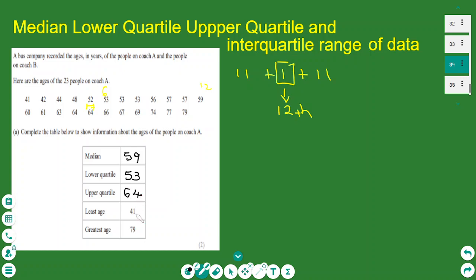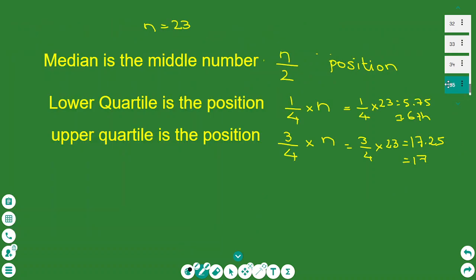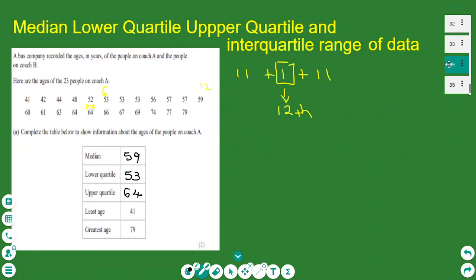And now we completed the table. And this is, in this way, we found the median, the lower quartile, the upper quartile of this data.